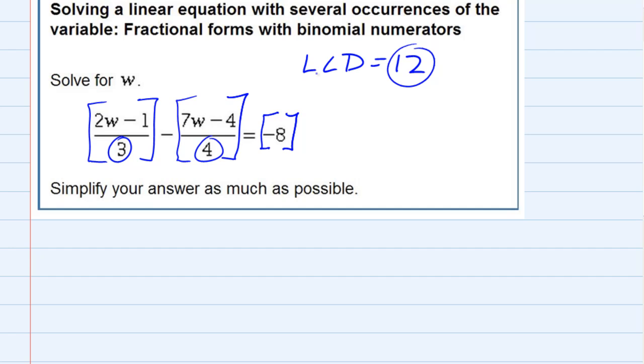So on the left-hand side, we would have 12 times our 2w minus 1 over 3 minus, let me put in another 12 here, times 7w minus 4 over 4.